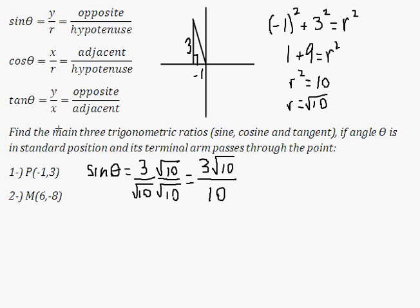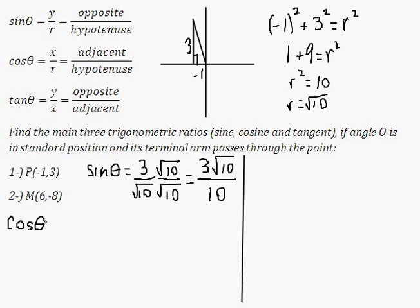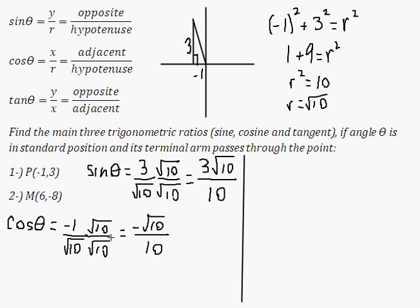Now I'm going to find cosine of theta. I'm going to draw a line here just so I have room to answer the second question later — this is for the first point. Cosine of theta is just going to be x over r: x is negative 1, over r which is root 10. Again I'm going to rationalize it, so root 10 over root 10 gives negative root 10 over root 100, which is 10. So cosine of theta is negative root 10 over 10.